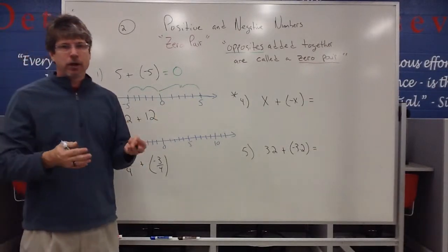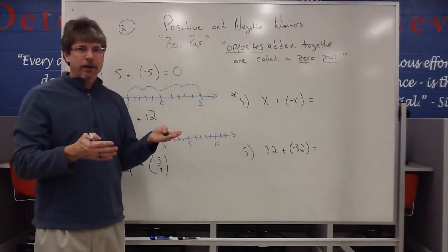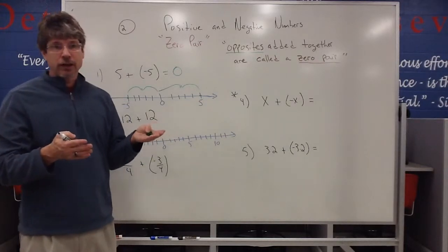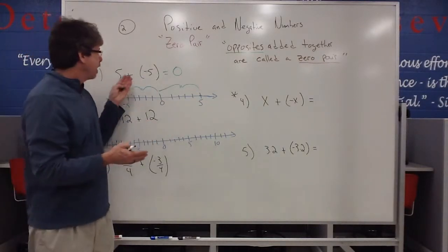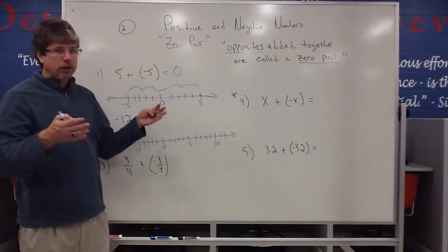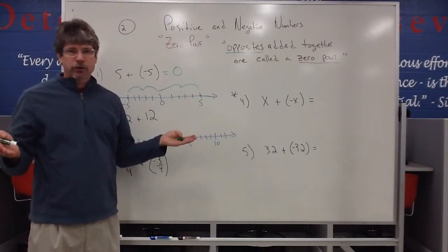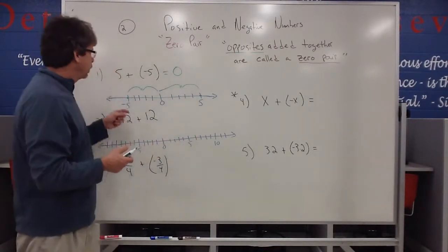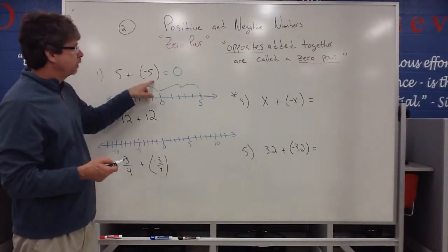Just like, for instance, if you think of money, five dollars of income and five dollars of debt. Again, debt would be like a negative number. So five dollars of income and five dollars of debt, if you put those together, they're going to just zero each other out or cancel each other out. We call that a zero pair when you add opposites.